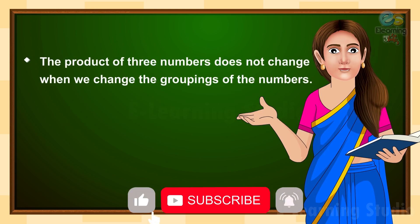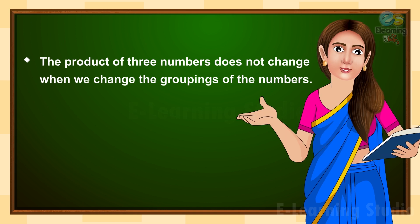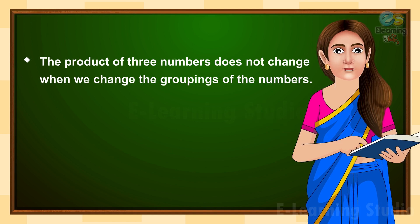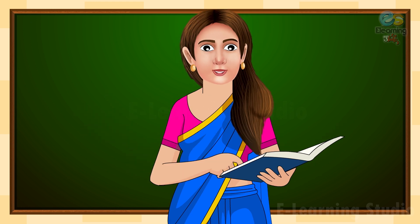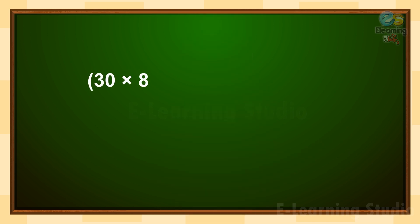The product of three numbers does not change when we change the groupings of the numbers. Let us understand grouping or associative property with the help of some examples. Bracket open 30 multiply 8 bracket close, multiply 4, is equal to 240, multiply 4, is equal to 960.